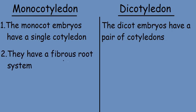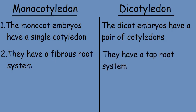Monocotyledons have a fibrous root system, while dicotyledons have a tap root system.